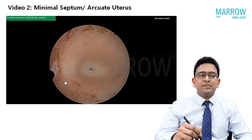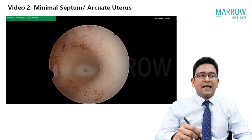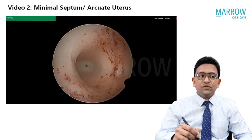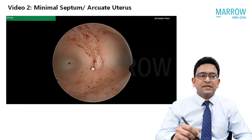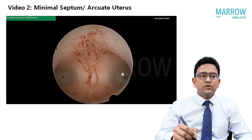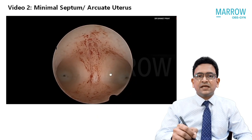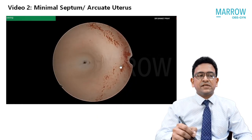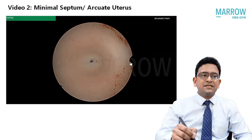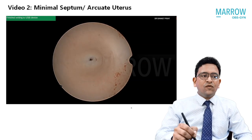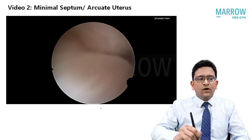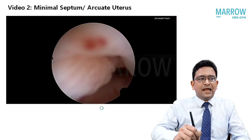There is a definite demarcation — an inward indentation of the fundus of the uterus — and this can be classified as a septate uterus, though the amount of septum is minimal. The two tubal ostia can be clearly seen on both sides in this picture. So this is a septate uterus.